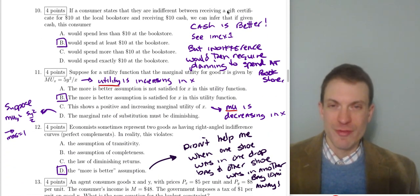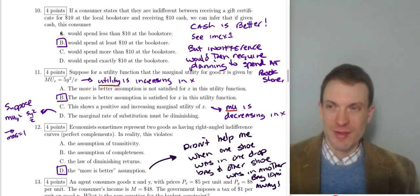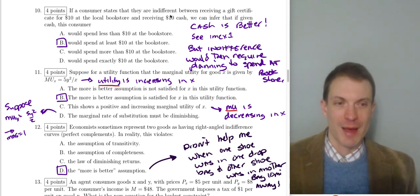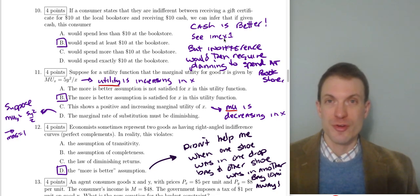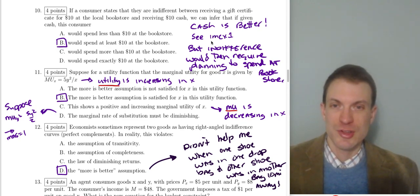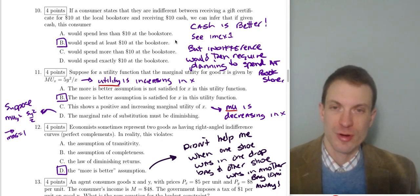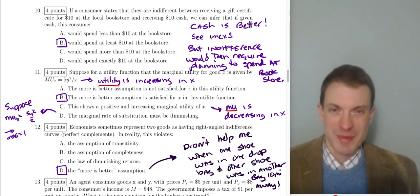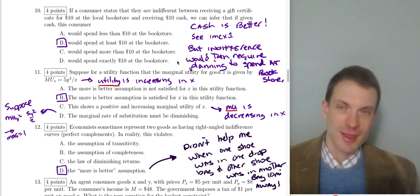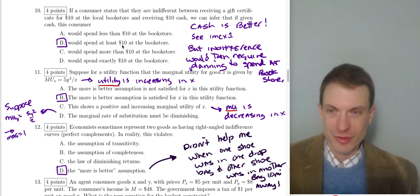Question nine: if a consumer states they're indifferent between a $10 gift certificate at the local bookstore and $10 cash, what can we infer? Cash is always at least as good as a gift certificate because cash is fungible — you can use it in whichever consumption pattern you'd like, giving you more options. If the consumer says they're indifferent, it must be the case that they're already planning to spend at least $10 at the bookstore — otherwise they'd prefer the cash.